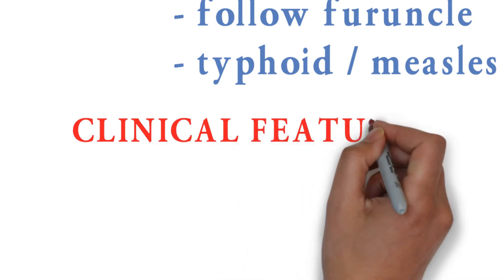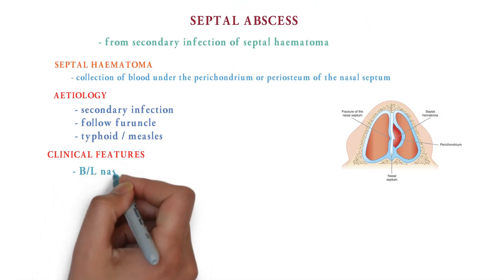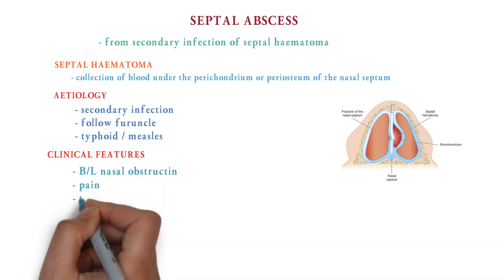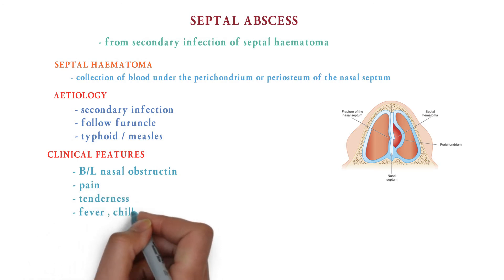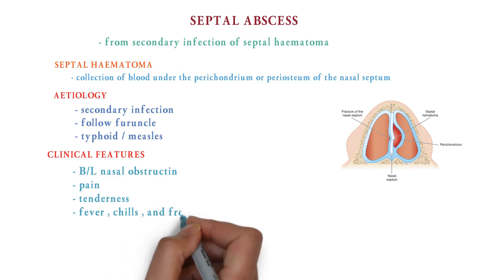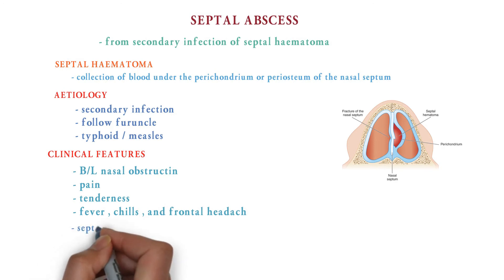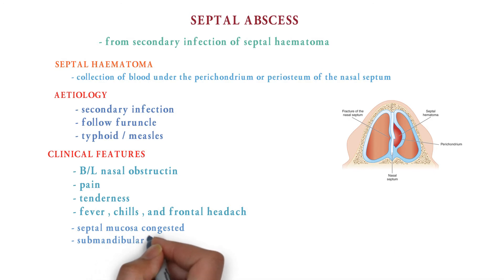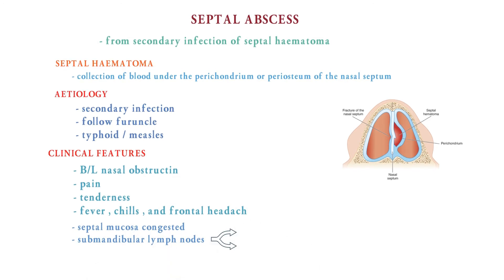In clinical features, there is bilateral nasal obstruction, which we already saw in septal hematoma. There may be pain and tenderness, fever, chills, and frontal headache. On examination, there is congestion of the septal mucosa and the submandibular lymph nodes can be enlarged or tender.